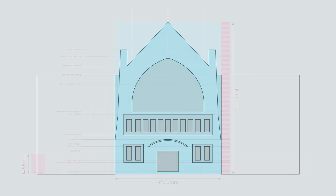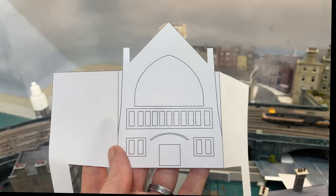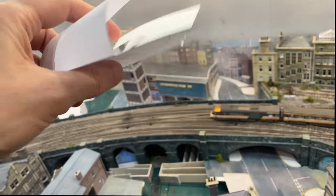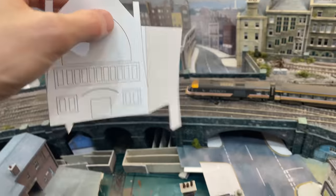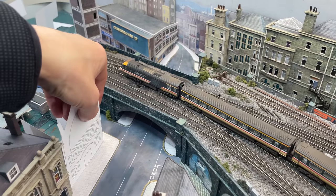At this point, I printed the building as a line drawing onto basic copier paper. With a couple of folds, it dropped onto High Street, and I could tell straight away that it would look superb.